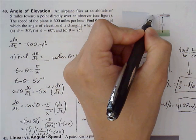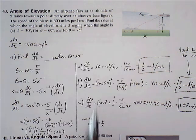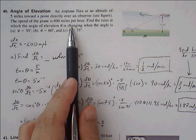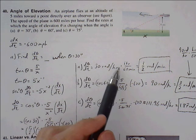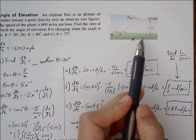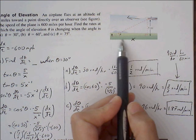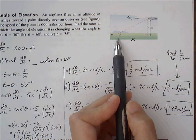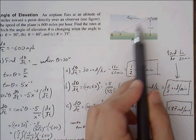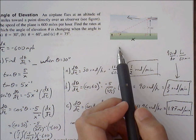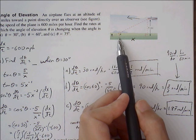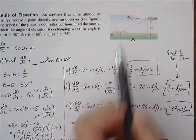So you have the plane that is moving towards the observer. The speed of the plane is 600 miles per hour. Find the rate at which the angle of elevation is changing. So we can think of x representing the horizontal distance between the plane and the person, and 5 represents the height, then we have the hypotenuse giving us the distance between the plane and the bystander, and then we have theta.